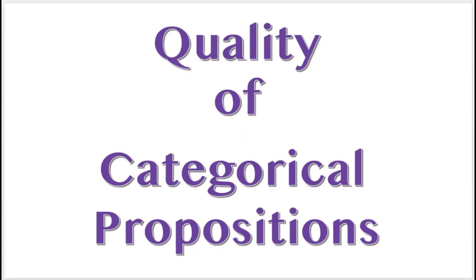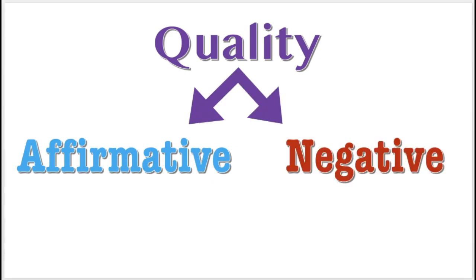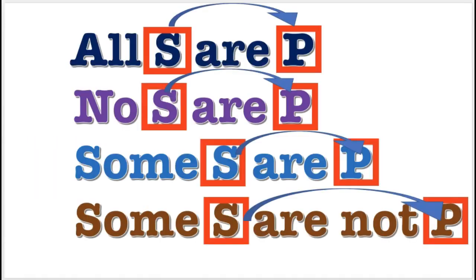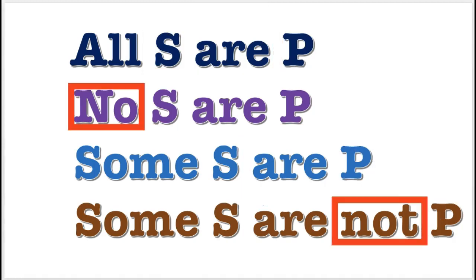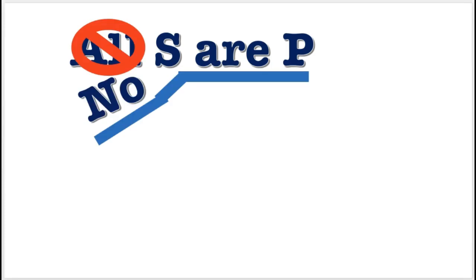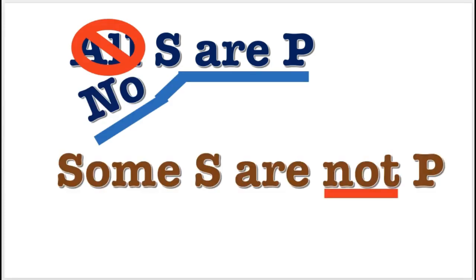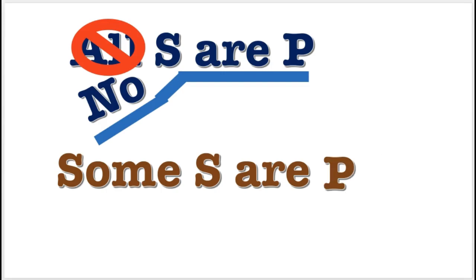The quality of a categorical proposition is either affirmative or negative, and the relationship between the subject and the predicate is either affirmed or denied. If it is affirmed, then we're going to deny it. If it is denied, then we're going to affirm it.